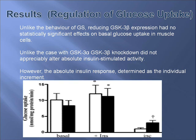However, the absolute insulin response, determined as the individual increment in uptake over basal with the acute insulin treatment, was more than double when GSK3 beta expression was reduced. This can be seen on the graph showing the effect of GSK3 beta knockdown on glucose uptake activity.